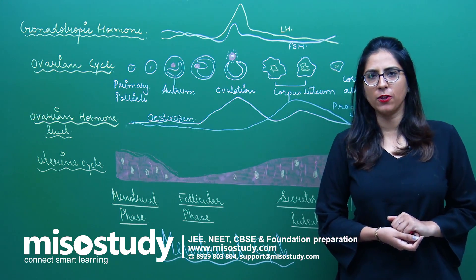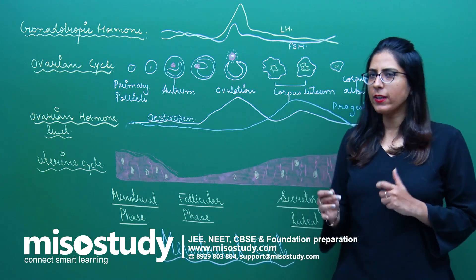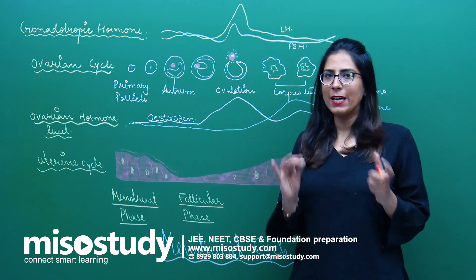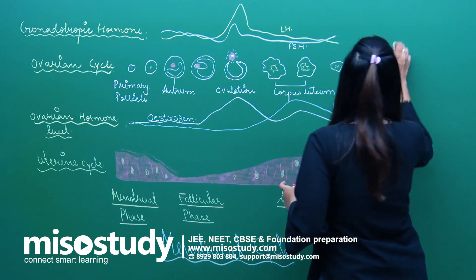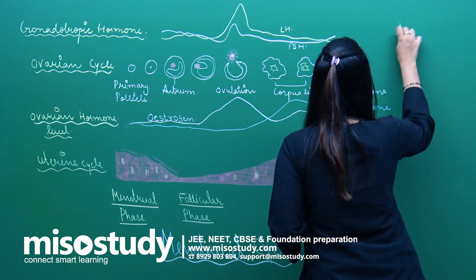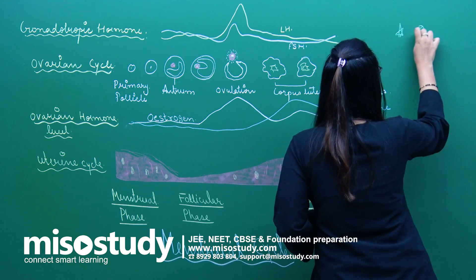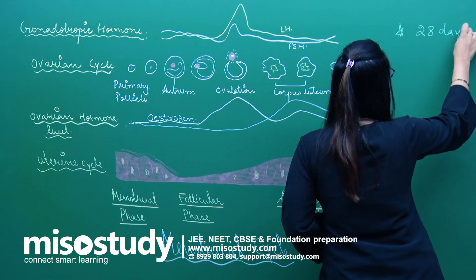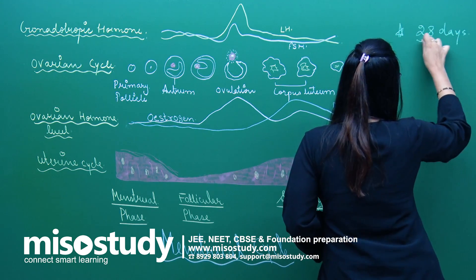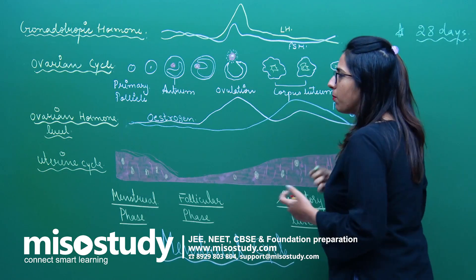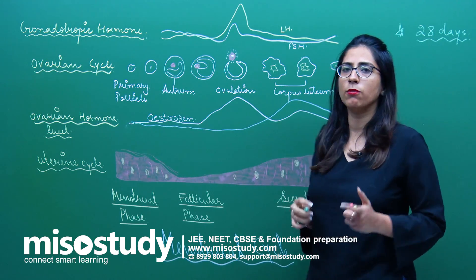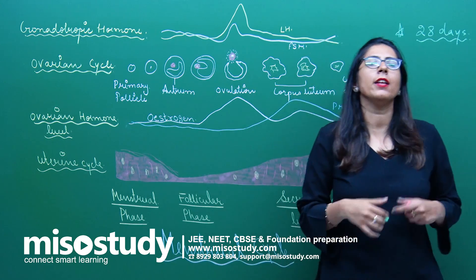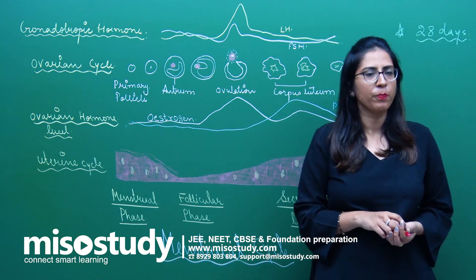The menstrual cycle lasts for around 28 days on average. It can vary — in some women it is around 30 to 31 days, and in some ladies it is less also.